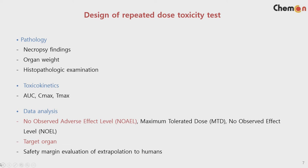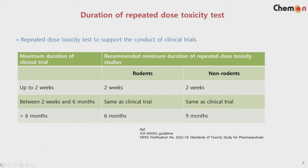By having the NOEL calculation, based on phase one, what kind of dose can be used for phase one can be decided, including the safety margin. For the repeated dose toxicity testing, the next ICH M3R2 or MFDS guidelines say that IND and NDA may be different, but the duration of the clinical trial is identified for rodent and non-rodents in a provided table.